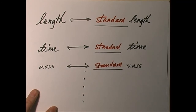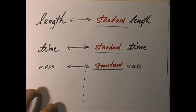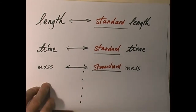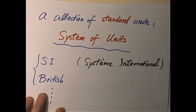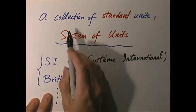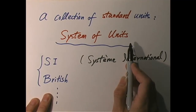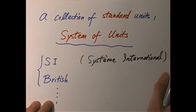When you put a collection of these standard quantities together — say, standard length, standard time, standard mass — you have established what is called a system of units. There are many different types of unit systems.